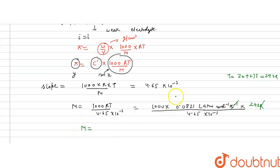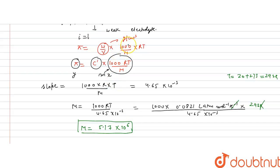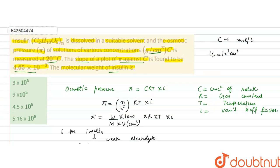The molecular weight equals 1000 × 0.0821 × 293 / (4.65 × 10⁻³), which gives 5.17 × 10⁶. The units work out to gram per mole because the volume in liters and the conversion factor of 1000 for centimeter cube cancel out appropriately, giving molecular weight in gram per mole.